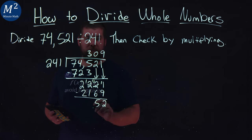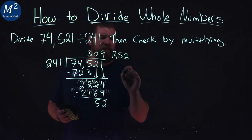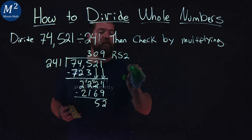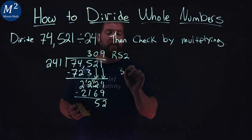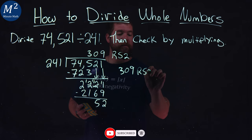One and one cancel, two and two. So, we have 309 with a remainder of 52. It's a big remainder. So, 309, messed up there. I wrote 30 not... 309, if I can write that, with a remainder of 52 is my answer.